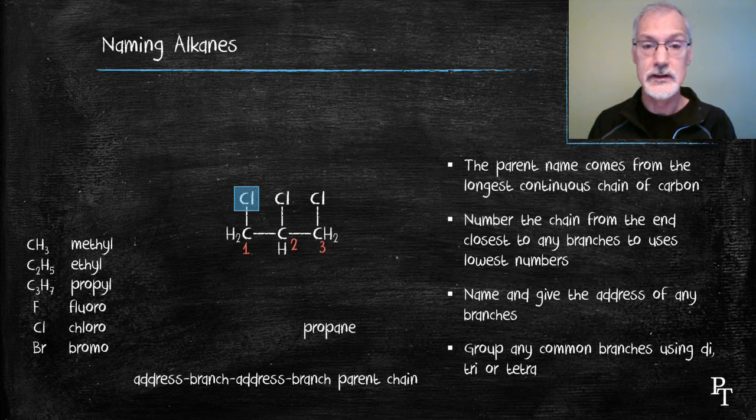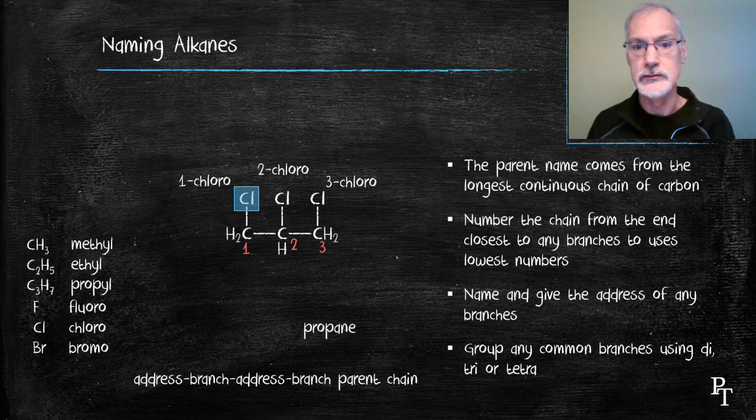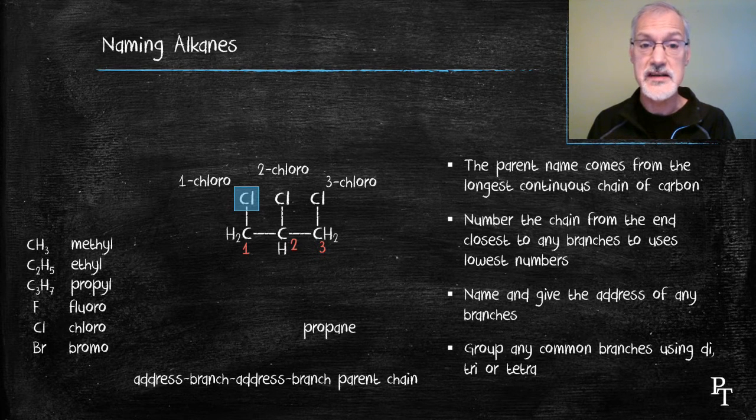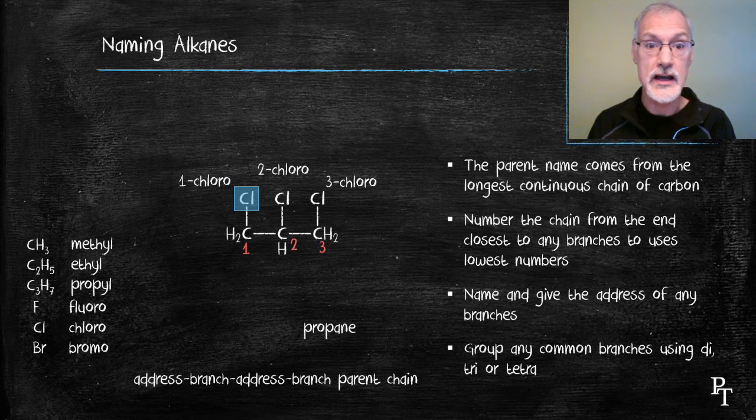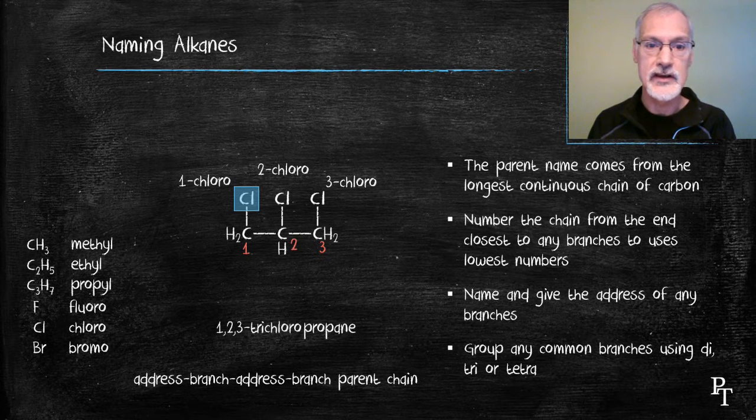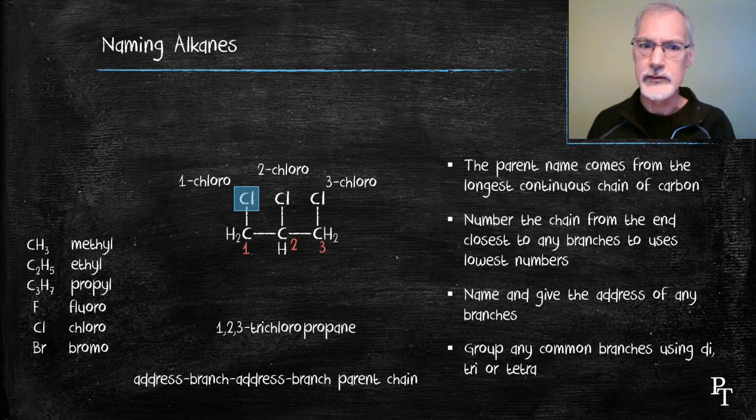The side group here is chloro. And so I give the address one chloro, also the others two and three chloro. In this case, I can employ my fourth rule. I'm going to group them together and call them tri-chloro. And I also have to give the address of each chlorine.